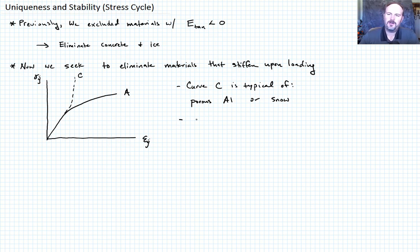This is typical of porous aluminum would be an example, or maybe snow. Obviously in tension that's not the case but in compression it would stiffen like this. The key feature here is that for our postulates that we talked about previously, both A and C will satisfy the postulate one that we developed from the previous lecture.